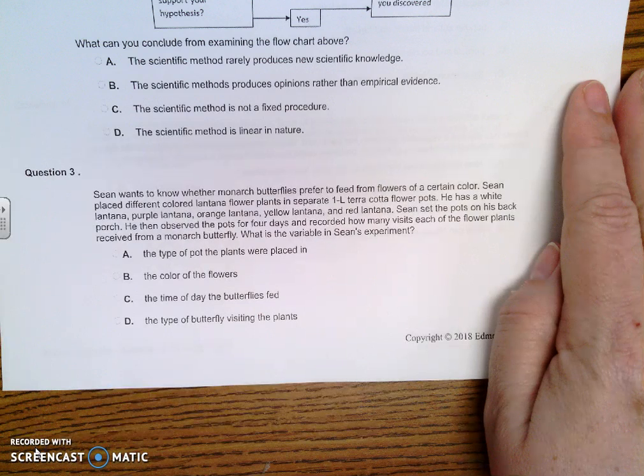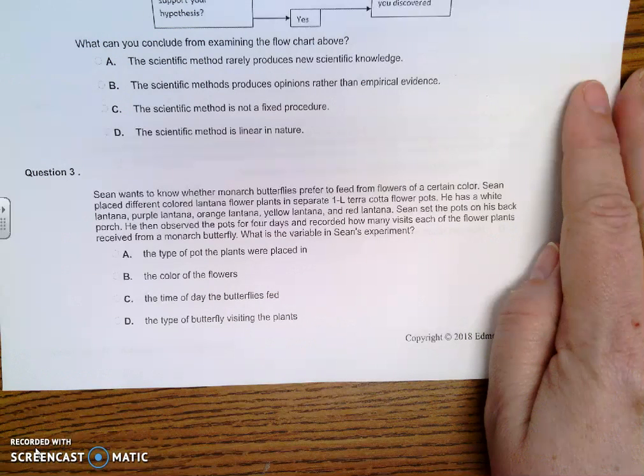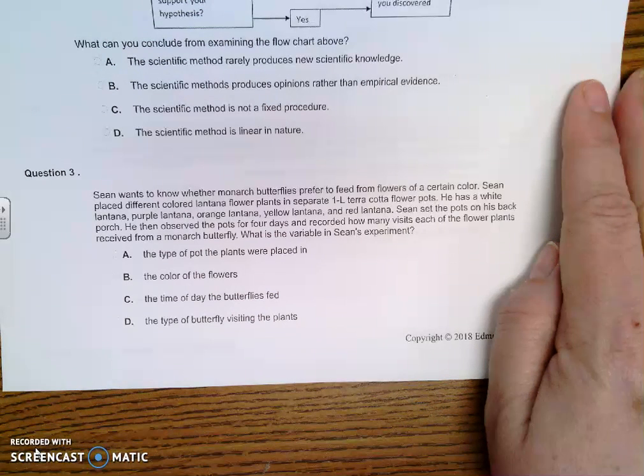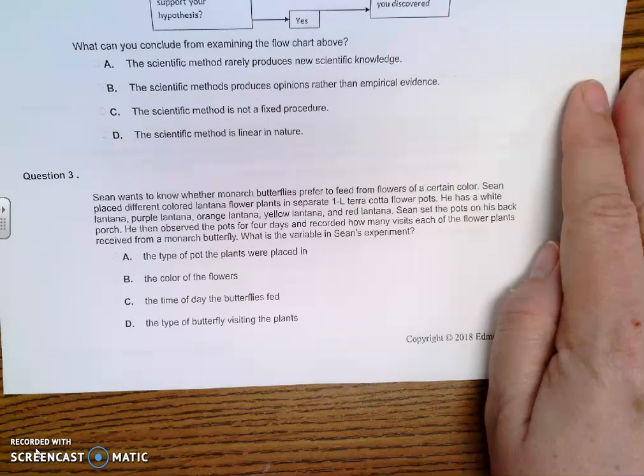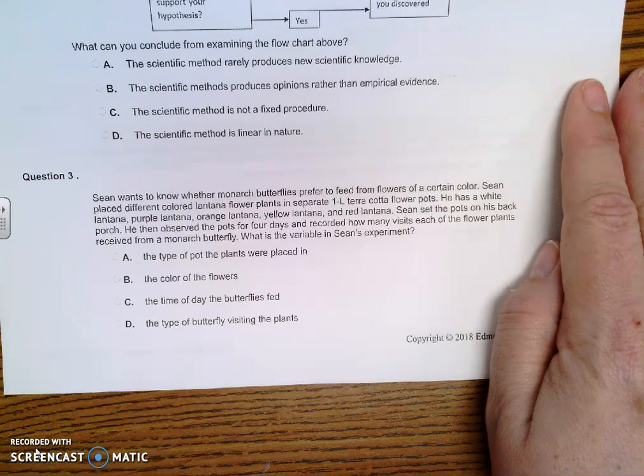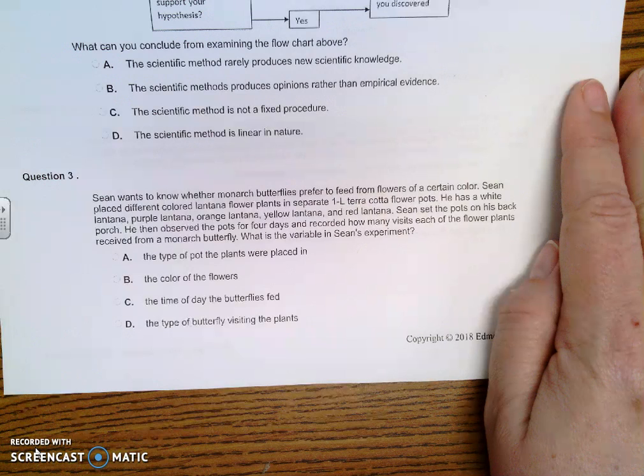Sean wants to know whether monarch butterflies prefer to feed from flowers of a certain color. Sean placed different colored lantana flower plants in separate 1L terracotta flower pots. He has a white lantana, purple lantana, orange lantana, yellow lantana, and red lantana. Sean set the pots on his back porch. He then observed the pots for four days and recorded how many visits each of the flower plants received from a monarch butterfly. What is the variable in Sean's experiment?